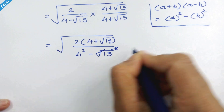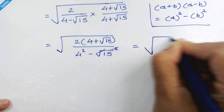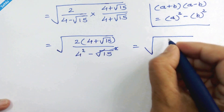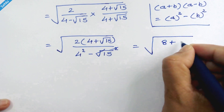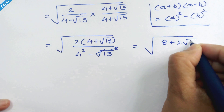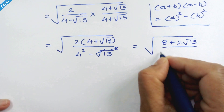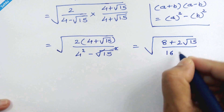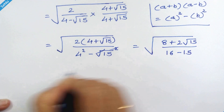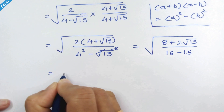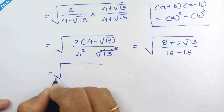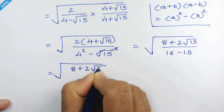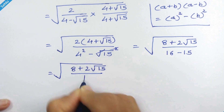The square and square root cancel out. Now we plug 2 into the bracket, giving 8 plus 2 times square root of 15, upon 4 squared which is 16. So we have 16 minus 15, giving square root of 8 plus 2 times square root of 15, upon 1.